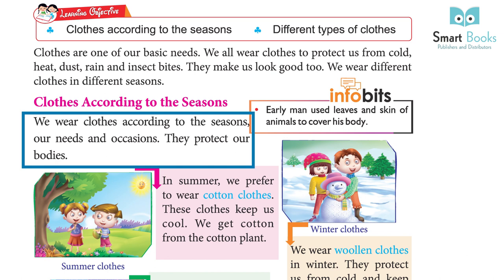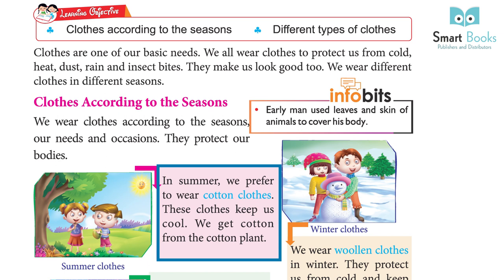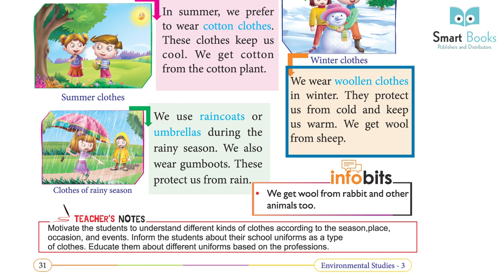We wear clothes according to the seasons, our needs, and occasions. They protect our bodies. Early man used leaves and skin of animals to cover his body. In summer, we prefer to wear cotton clothes. These clothes keep us cool. We get cotton from the cotton plant.